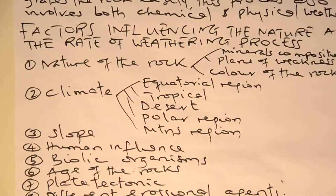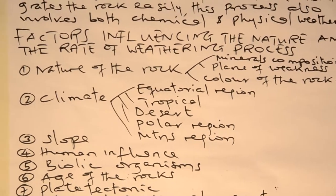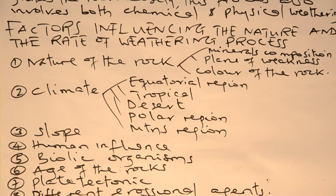Another factor which can cause weathering to take place in a particular area is climate. Here we have to describe different natural regions of the world. For instance, in climatology, natural regions of the world consist of different types: equatorial, tropical, desert, polar, mountainous, Mediterranean, and others. For instance, in the equatorial region...